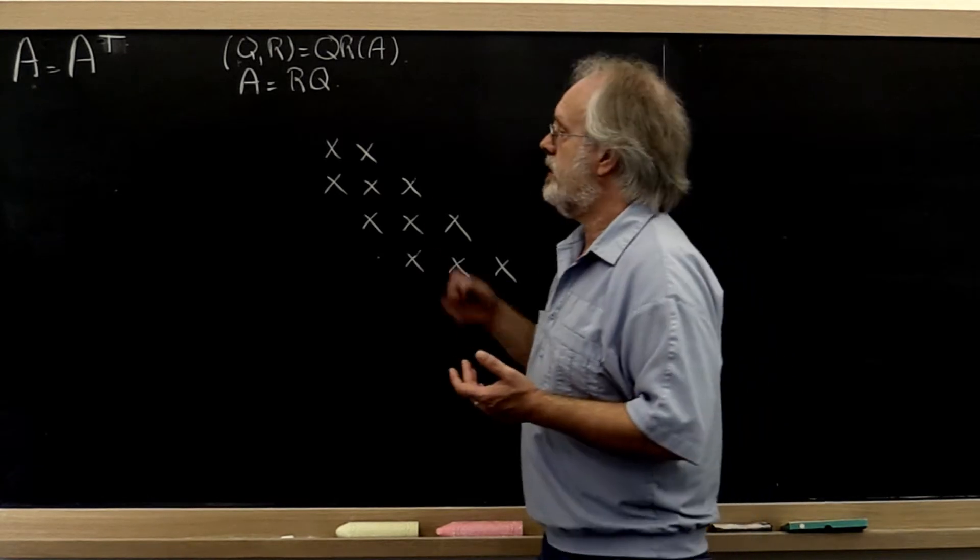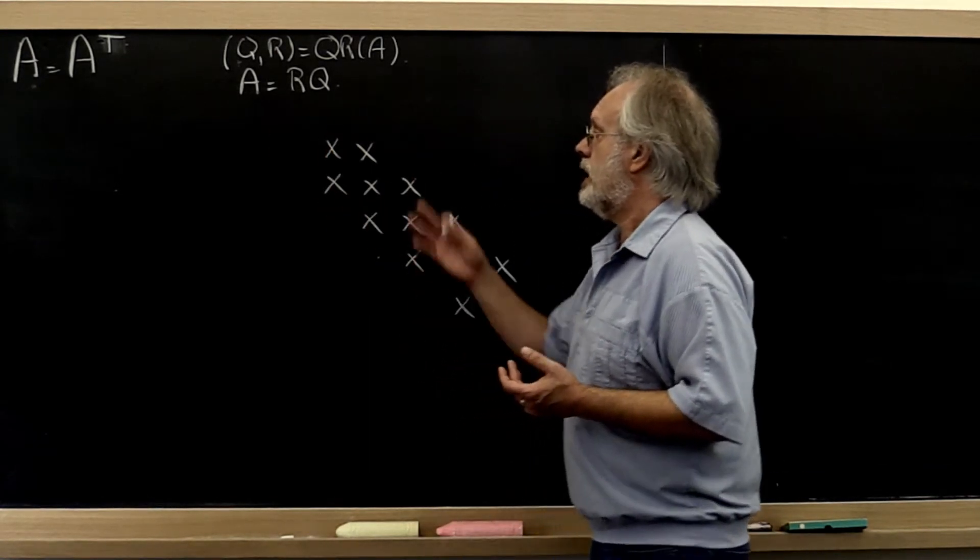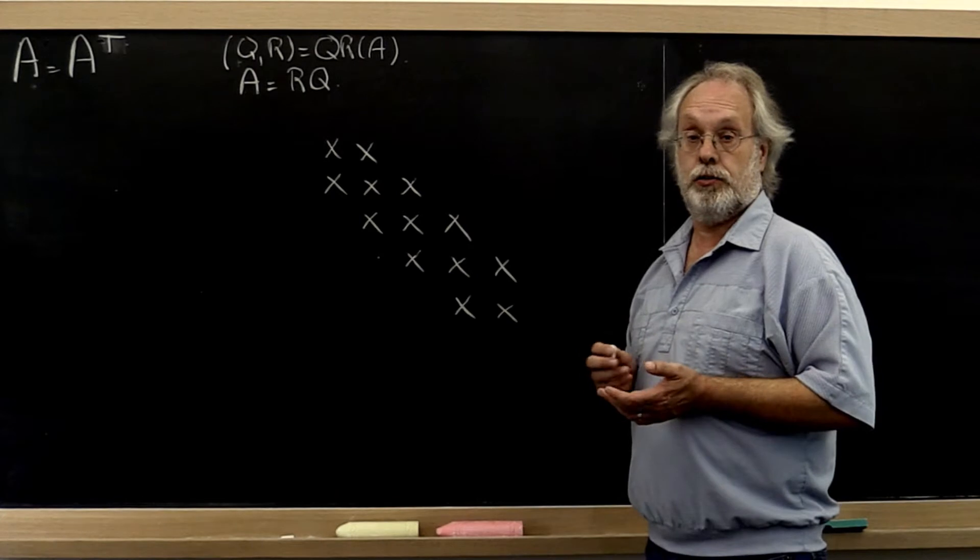What we saw in the last unit is that we can take a Hermitian matrix A and reduce it to a real valued tridiagonal matrix.